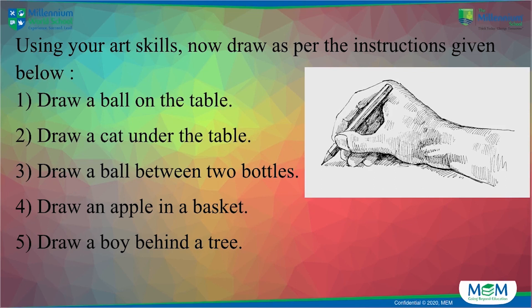Here is another interesting activity for you — I'm sure you are going to enjoy doing this. Quickly, with your books and pen, I want you to time yourself while doing this. Give yourself 30 seconds. I don't expect perfect drawing, but very roughly you can draw these figures following the instructions: draw a ball on the table, draw a cat under the table, draw a ball between two bottles, draw an apple in a basket, draw a boy behind a tree. Time yourself for every instruction, give yourself 30 seconds and you should be done. Come on, let's pick your pencils and start drawing!